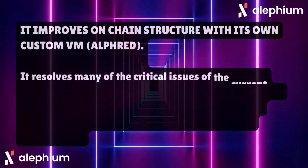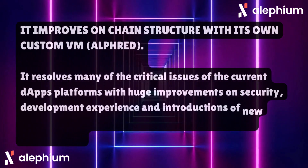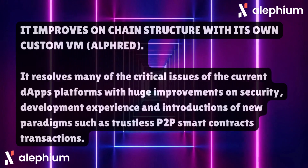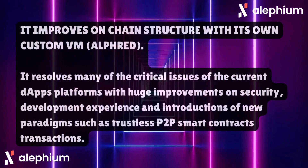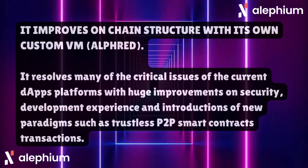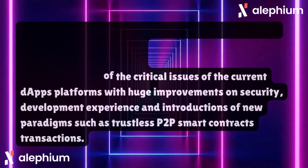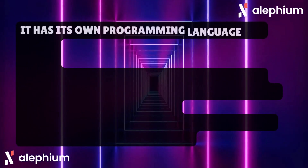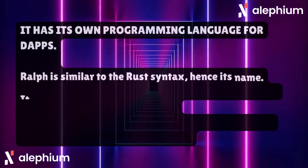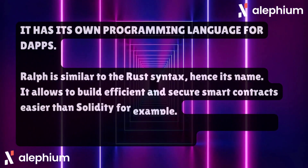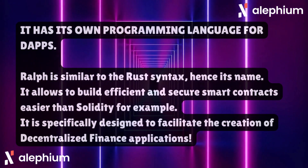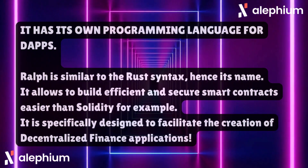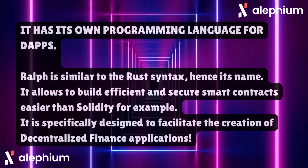It improves on chain structure with its own custom VM, Alford. It resolves many of the critical issues of current DApp platforms with huge improvements on security, development experience, and introductions of new paradigms such as trustless P2P smart contract transactions. It has its own programming language for DApps — Ralph, which is similar to Rust syntax, hence its name. It allows developers to build efficient and secure smart contracts more easily than Solidity, and is specifically designed to facilitate the creation of decentralized finance applications.